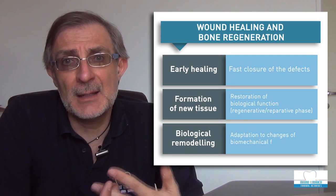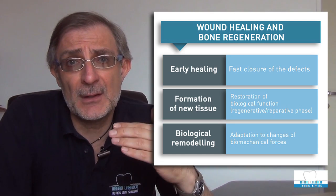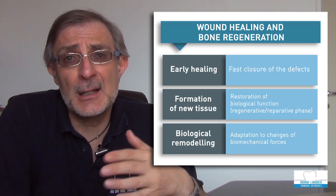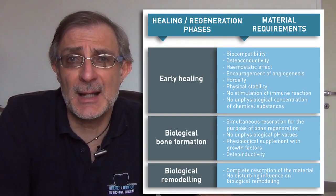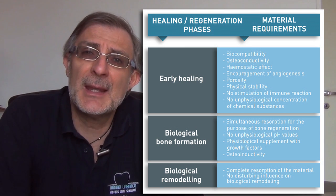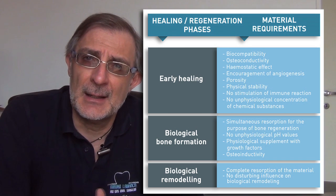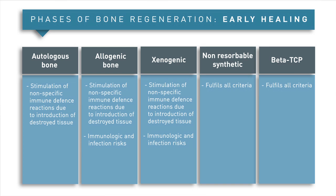Biomaterials interact with the healing processes, especially in the two first healing stages. One is the early healing and the second one is the remodeling of the bone. If we go through the biological moments of the healing processes, we can easily see that not even the autogenous bone — usually considered as the gold standard — is really the best material for some aspects. Interestingly, beta-tricalcium phosphate, which is a synthetic biomaterial, seems to have all the characteristics that we really need for a good regeneration with a total, perfect healing of the tissue.